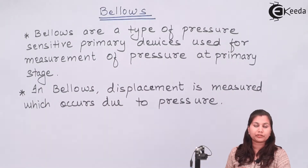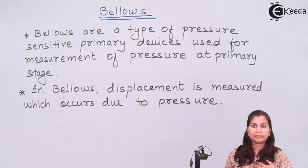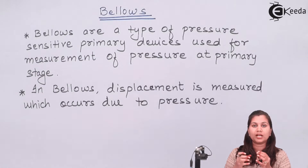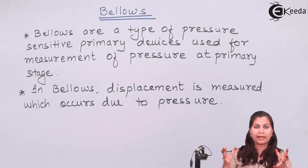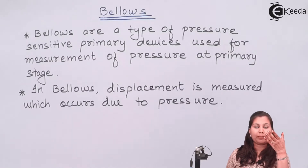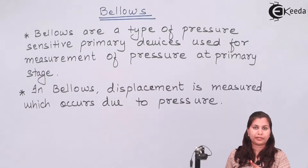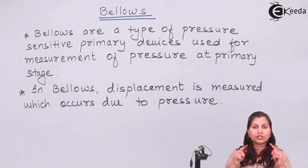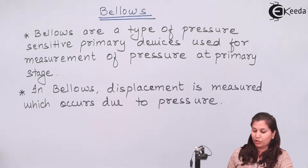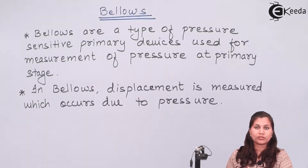Bellows are used for the measurement of pressure. How they measure the pressure — because bellows are made up of elastic material, so when the pressure is applied to the bellows, the elastic material is going to expand or change its shape. So by measuring that change in shape we can measure the pressure, because the shape change of the bellows will be proportional to the applied pressure. This is the working principle of the bellows — how they measure the pressure of the fluids.